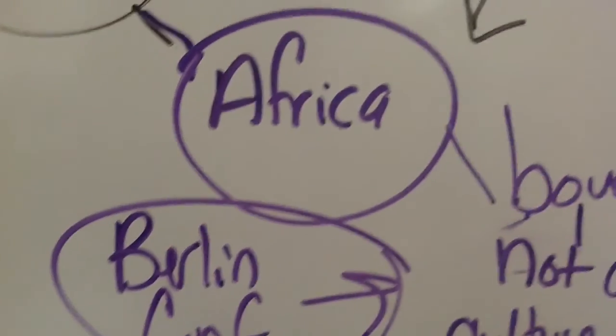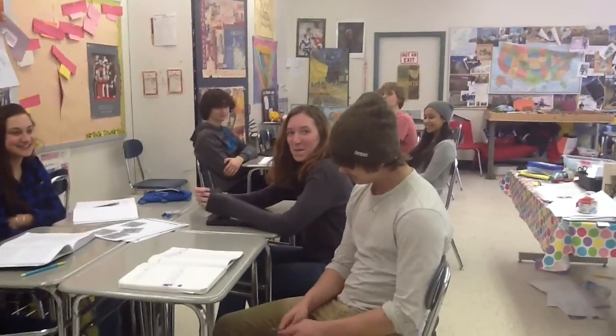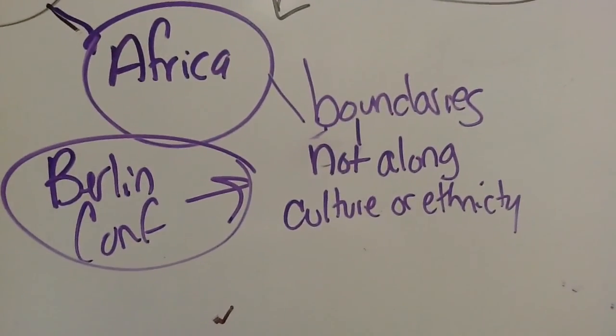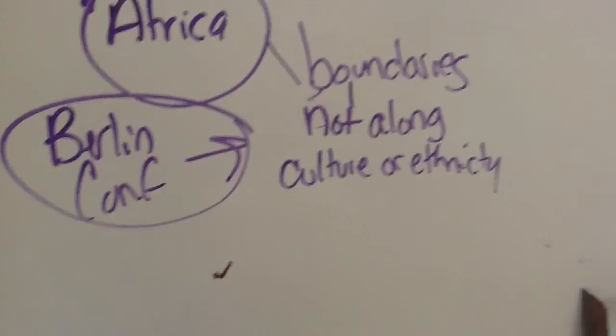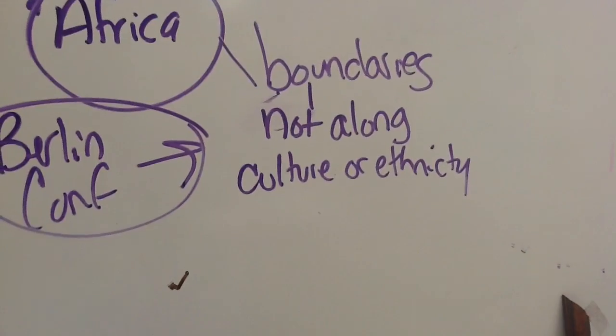A major focus was Africa and the Berlin Conference, where European powers divided Africa into territories and took control. No African nation was invited to the conference. When they drew boundaries, it was along lines that suited European powers, not along African cultural or ethnic group boundaries. This created many problems, and many of those borders still stand today.